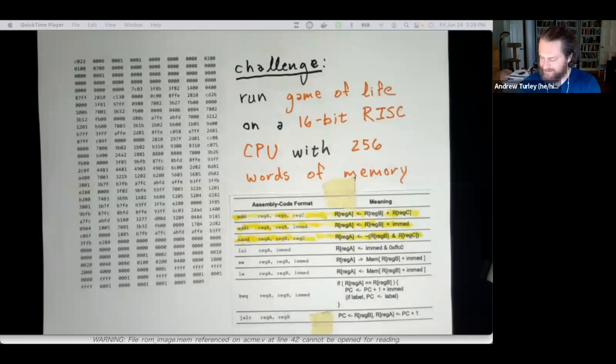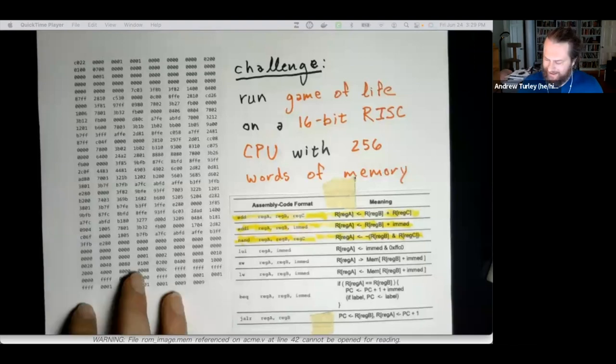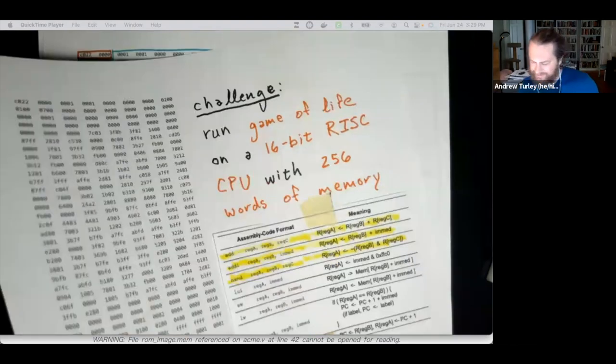So yeah, it's a 16-bit CPU. The really important thing to keep in mind is we basically had eight instructions, and only three of them are math, and none of them are highly useful. Two of them are different forms of add, and one of them is NAND. In theory, you can build anything you want out of those operations. In practice, it's really hard. So the challenge for us was to make that work.